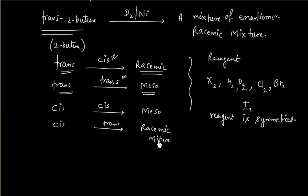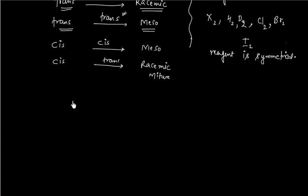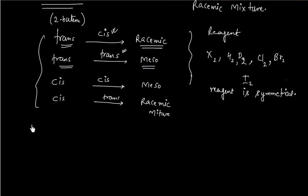This is a summary of the addition of different groups on cis-2-butene and trans-2-butene — that is, the addition of symmetrical reagents to cis-2-butene and trans-2-butene.